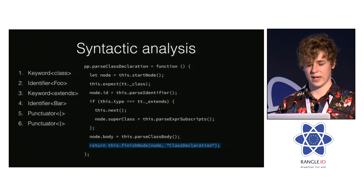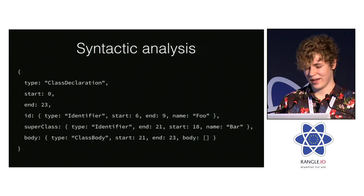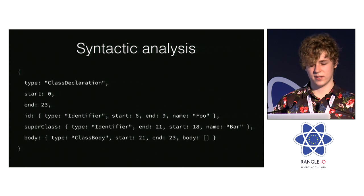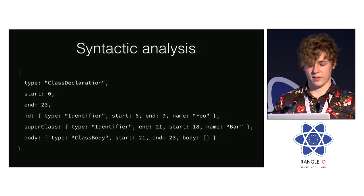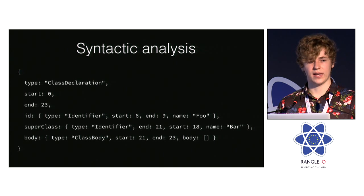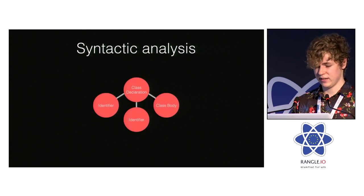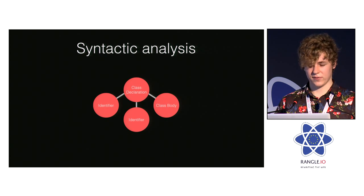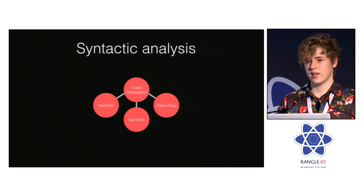Now that we have this, here is what the AST would look like. You can see the start and end properties that startNode and finishNode added, and each element of the input source clearly defined. This would be the graph of that previous code — we have the class ID, the superclass, and then the body. Now that we've covered the parser, let's move on to the transformer.